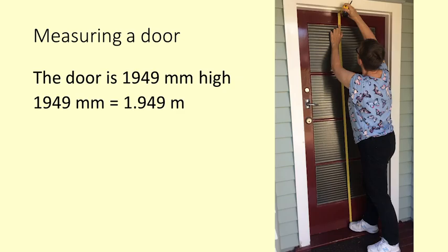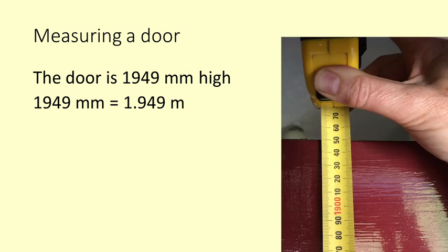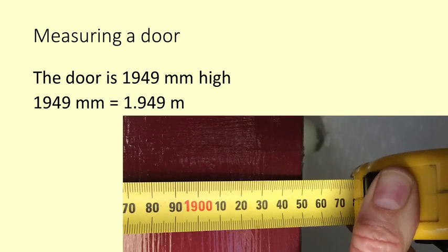Here are some examples. Measuring a door. The door is 1949 millimetres high. We convert that to metres. 1949 millimetres is 1.949 metres.